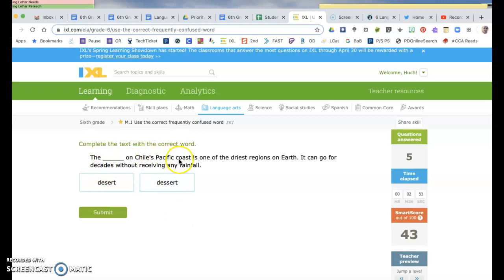So I have to figure out which one I need first. The blank on Chile's Pacific Coast is one of the driest regions on Earth. So this means a desert, something with lots of sand and heat. We would want less of that, so there's only one S. With dessert you want more, so there's two S's. At least that's how I was taught.